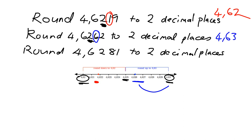All right, you try the next one. Pause now and do it in your homework books. Again, we're going to the second decimal place, so we look 1 to the right of that. That's an 8, so it's somewhere up here, so we have to round up to 4.63.